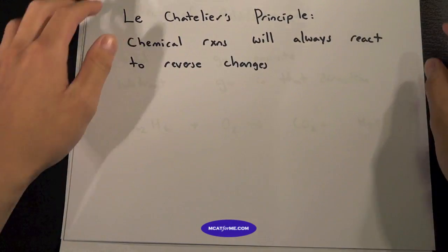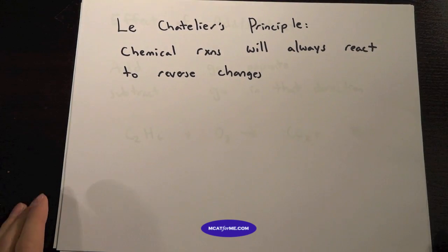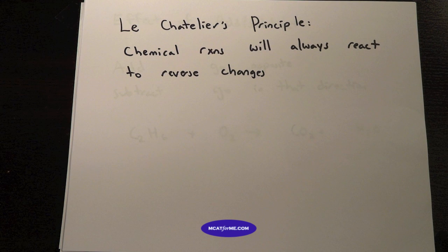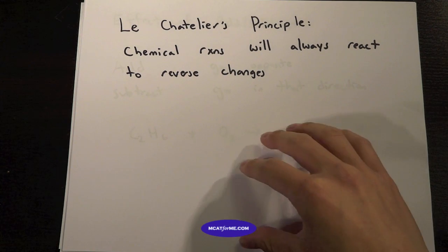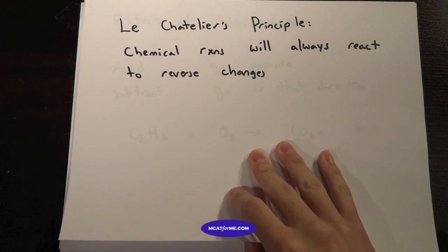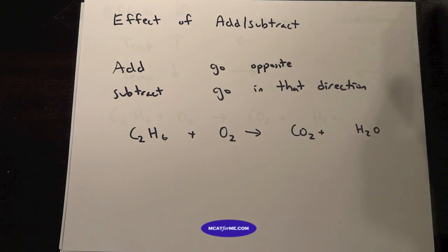So we're going to start and just define what this problem type is and it's Le Chatelier's principle. Le Chatelier's principle just says that chemical reactions will always react to reverse changes. And we'll see what exactly we mean by that.